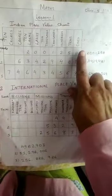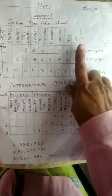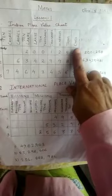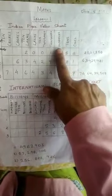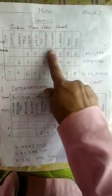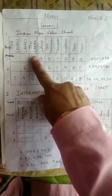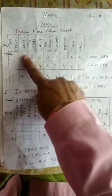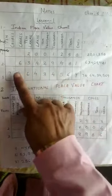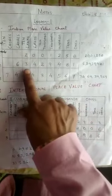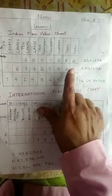We always start from the right hand side. So the places are: ones, tens, hundred, thousand, ten thousand, lakh, ten lakh, crore, ten crore. Now here are some examples of how to read and write the numbers.